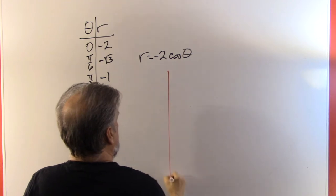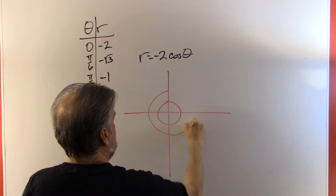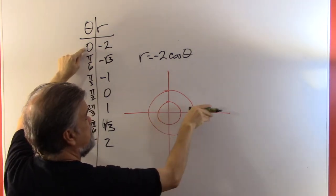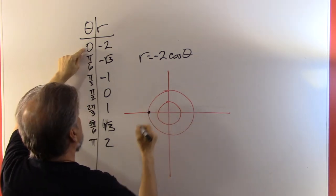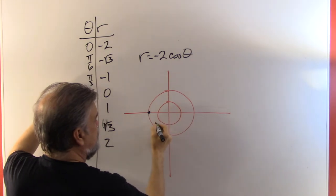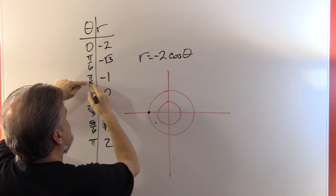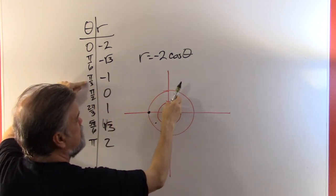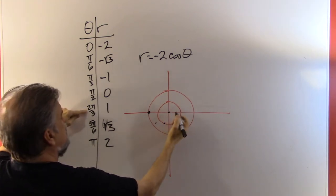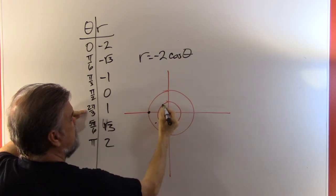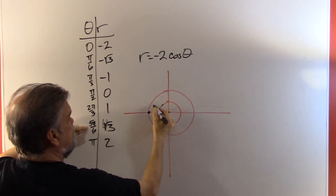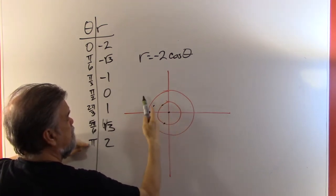So let's see if we can graph this. I'll say this is one unit away and this is two units away — not the most perfect graph in the world. At theta zero, r is negative two, so zero points in that direction and negative two means I back up two units, putting me over here. Pi over six, pointing sort of in that direction, negative root three — about negative 1.7, so right around there. Pi over three and negative one: pi over three points this way, backing up one unit to right there. Pi over two and zero puts me at the origin. Two pi over three, going this way, one unit — right around there. Five pi over six, going in this direction about 1.7 units, so there. And pi and two — I'm over here again.